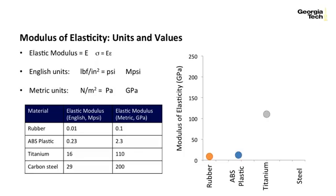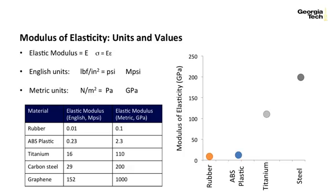Steel, commonly used in both the automotive and aerospace engineering industries, is right around the 30 mega-psi range. Metric equivalents are on the right of the chart. From this chart, we can see that plastics are much easier to deform than metals, and that steel is very difficult to deform or deflect. For something more exotic, graphene wins the elastic modulus prize with 152 mpsi — much stiffer than steel.